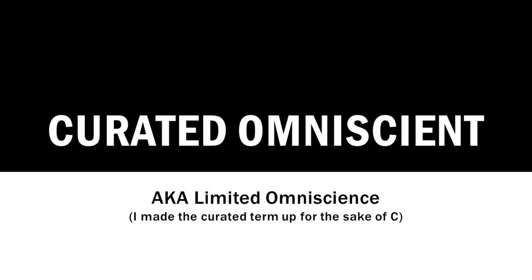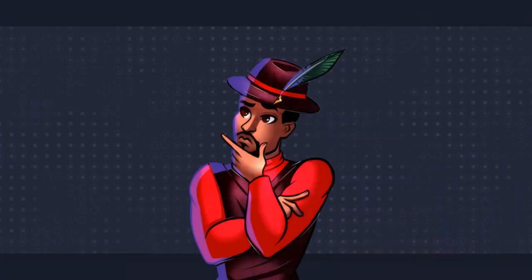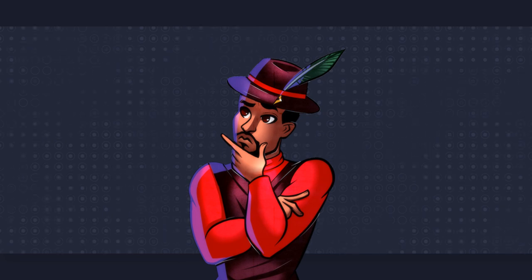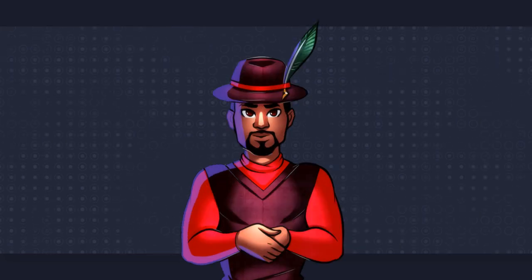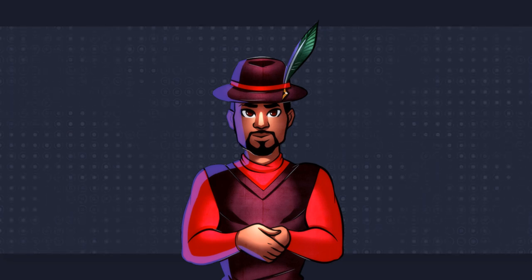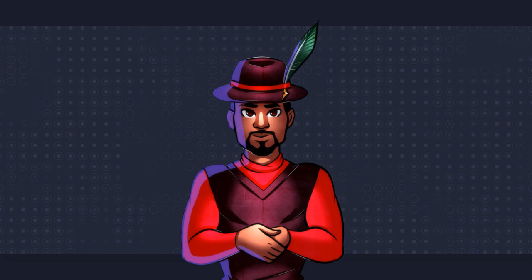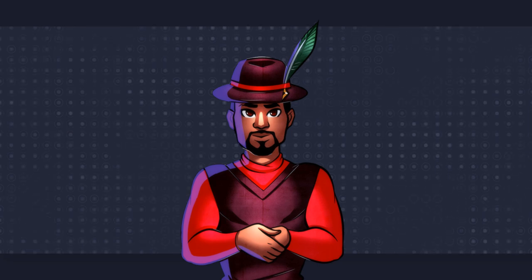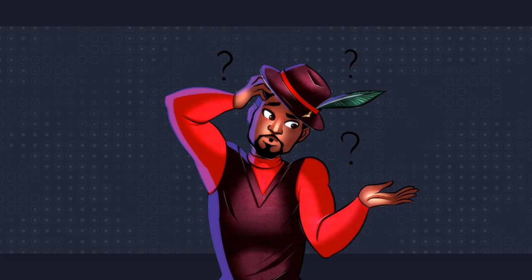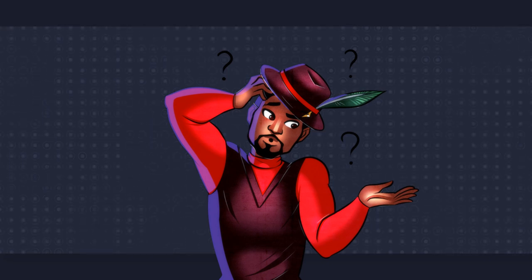As for curated omniscience, this is the name I came up with for what is also known as limited omniscience or selective omniscience. Think of it as a hybrid between contemporary and limited third-person POV. Basically, they use the writing techniques that come from omniscience, but keep the focus on a single character or two throughout the whole thing. Personally, I'd recommend just doing third-person limited instead when not sliding between narrative distances, but that's just me.